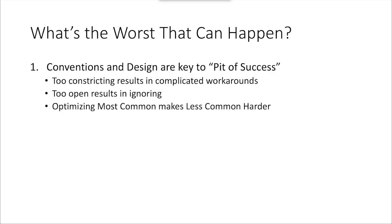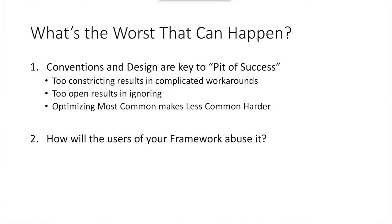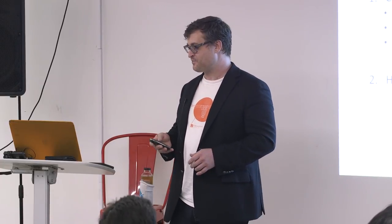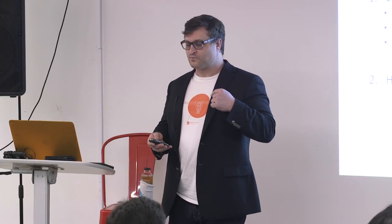Another thing I see often is people will optimize the most common actions or path, which makes everything that's not the most common that much harder to do. Whenever you're writing framework code or page object designs, you have to constantly be thinking: how are the people who are going to use this going to abuse it? Because people will take what you've put together and do crazy things that are really bad and cause problems you didn't anticipate. Part of the pit of success is to make it hard for them to abuse it.